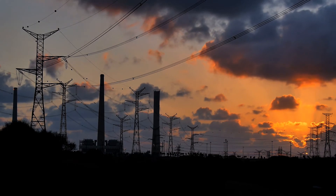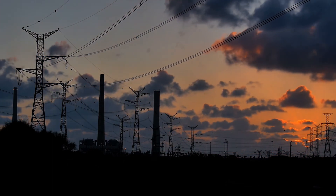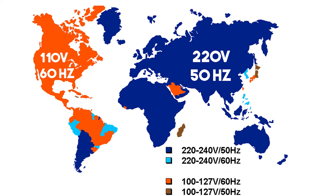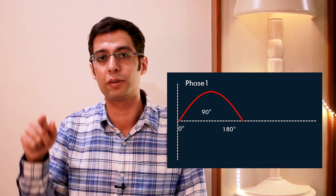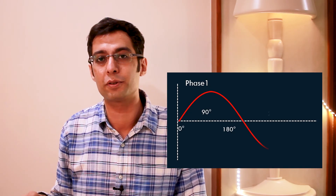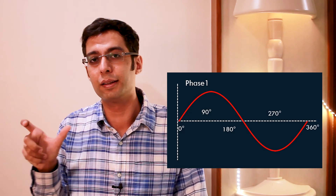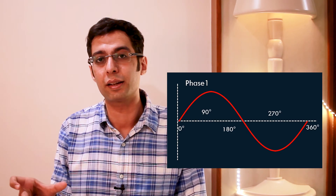The mains electricity coming into your house is alternating current, and that alternating current alternates at a frequency of 50 hertz or 60 hertz depending on your country. The voltage goes from 0 to 220 volts, comes back to 0, goes to negative 220 volts, and comes back to 0. This is one cycle, and this cycle repeats 50 times a second — we call that 50 hertz mains electricity.